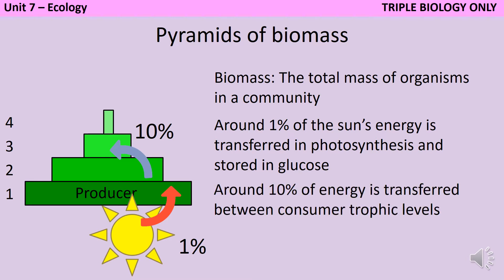There are a couple of different reasons for this. Firstly, not all parts of an organism may be eaten — there may be parts like tough bark or bones that are left behind and so never make it to the next trophic level. Then, not everything that gets eaten will actually be absorbed into the organism's body. It may be that they don't have the right enzymes to break something down, or it's just too tough, so it's never absorbed in the first place. And even when you do absorb something, your body may break it down and you may excrete the waste products.